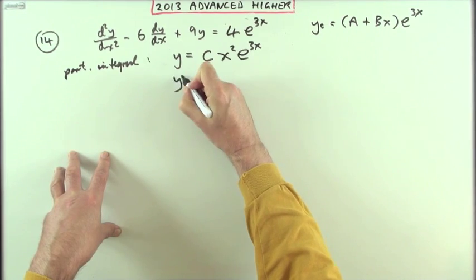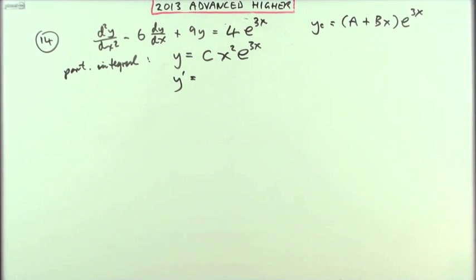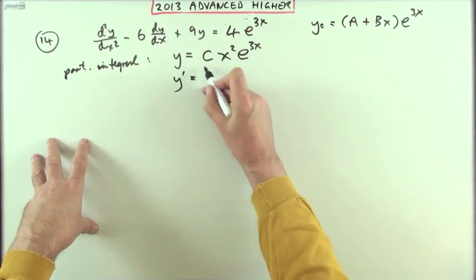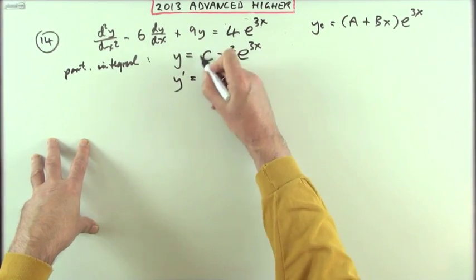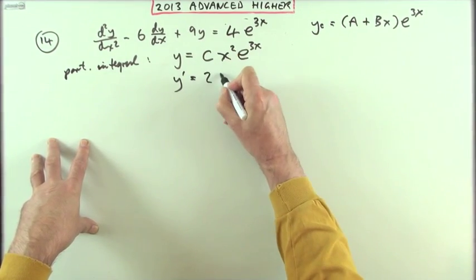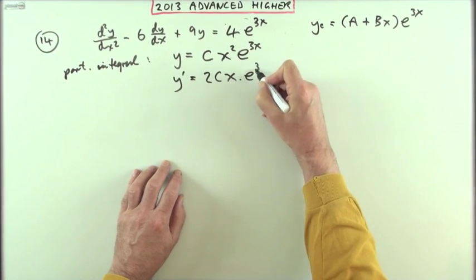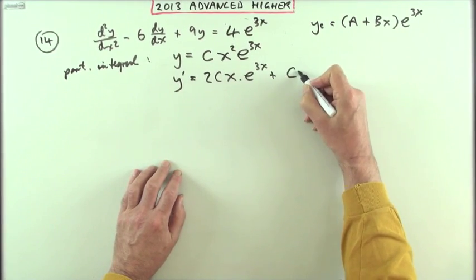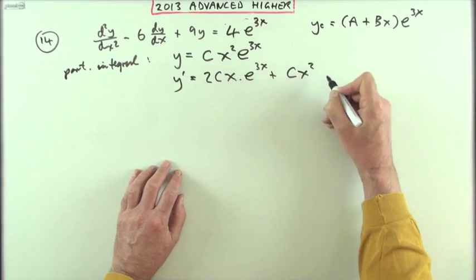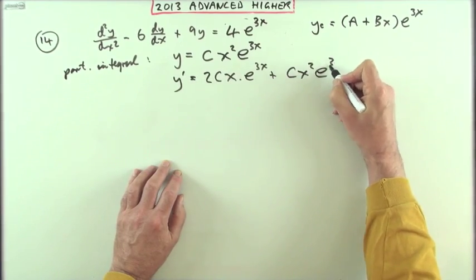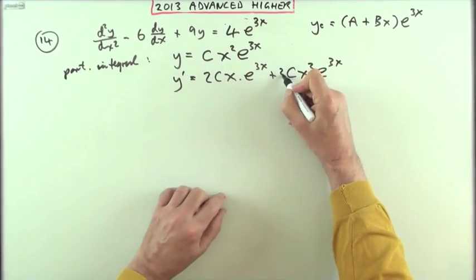So y' would be - it's a product - differentiate the first part: 2Cxe^(3x), plus leave that part alone, Cx², and that goes to e^(3x) multiplied by 3.